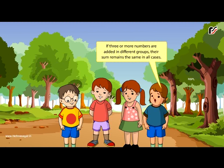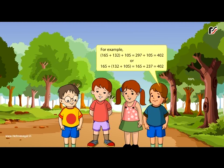If 3 or more numbers are added in different groups, their sum remains the same in all cases. For example, 165 plus 132 plus 105 is equal to 297 plus 105, which is equal to 402. Or, 165 plus 132 plus 105 is equal to 165 plus 237, which is also equal to 402.